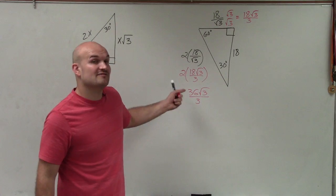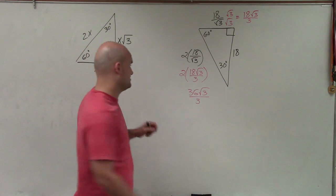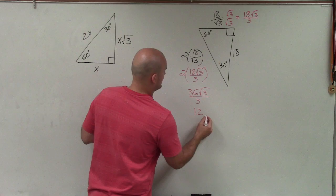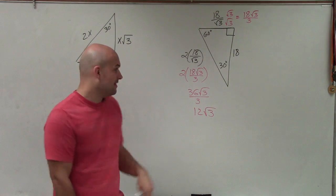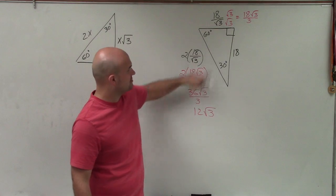And 36 divides evenly into 36 twelve times. So my final answer for my short leg is 12 times the square root of 3. So there you go, ladies and gentlemen. That's your hypotenuse. That's your short leg.